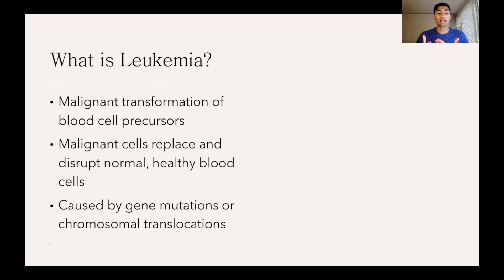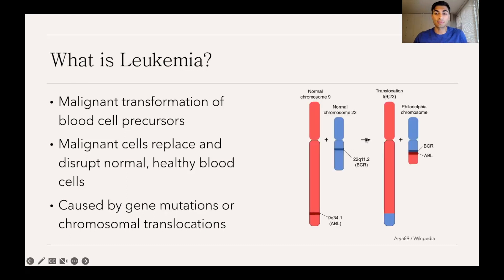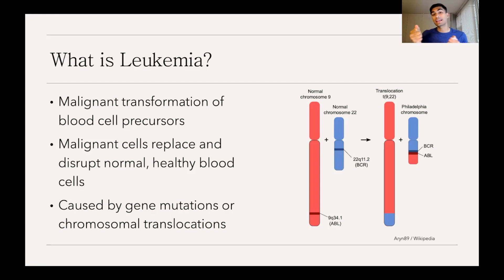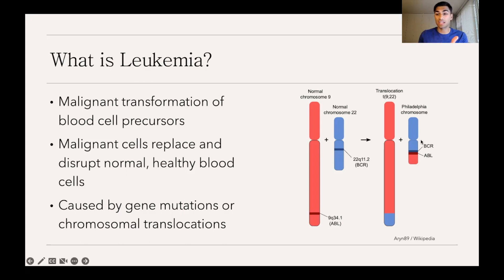Leukemia is caused by gene mutations or chromosomal translocations. A chromosomal translocation is also a type of mutation where two different segments of DNA on two different chromosomes get swapped. Sometimes when they swap, certain pieces of DNA get placed next to each other, creating a fusion gene — for example, the BCR-ABL gene — which can cause many of the issues seen in leukemia.